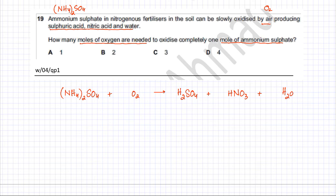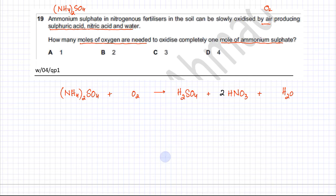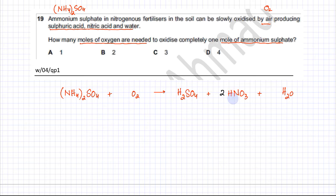We need to balance the equation keeping ammonium sulfate at 1 mole. Balance nitrogen first: there are 2 nitrogens in ammonium sulfate, so we need 2 nitric acid molecules. Sulfur is already balanced. Now count hydrogens: there are 8 hydrogens in ammonium sulfate. There are 2 in sulfuric acid and 2 in each nitric acid (that's 4 total), so we need 2 water molecules to account for the remaining 4 hydrogens, giving 8 hydrogens total.